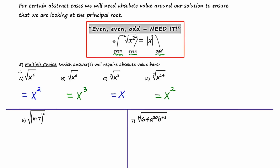Now let's consider absolute value using the chant: even, even, odd, need it. For answer choice A, the index is an implied two, which is even. The exponent of our variable is also even. And the power of our answer is also even. So we don't need absolute value — that's even, even, even, not the chant. For answer choice B, the index is an implied two, which is even. The power of the variable is six, which is even. And our answer was to a power of three, which is odd. Even, even, odd — we need it.